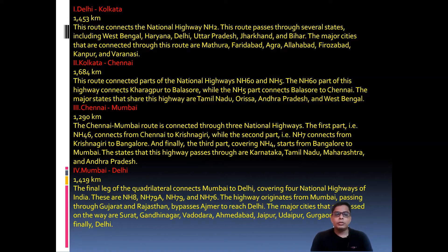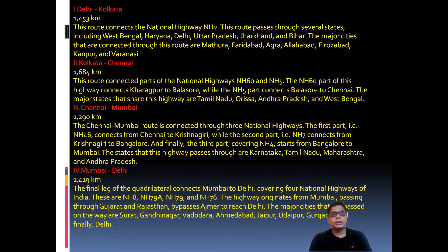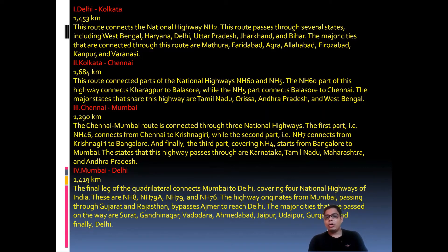The final leg is Mumbai to Delhi, covering a total of 1,419 kilometers via National Highways NH 8, NH 79A, NH 79, and NH 76. The highway originates from Mumbai, passing through Gujarat and Rajasthan, bypassing Ajmer, and reaching Delhi. Major cities connected along this route include Surat, Gandhinagar, Ahmedabad, Jaipur, Udaipur, and Gurgaon.